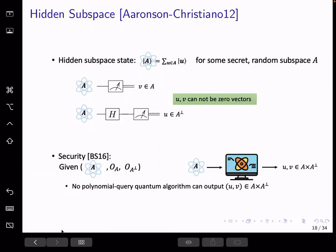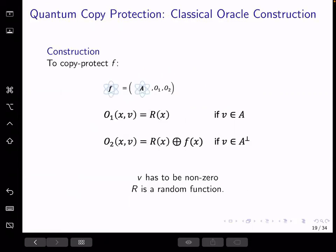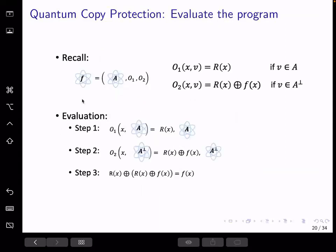Our copy protection construction for F consists of one copy of the subspace state A and two oracles. So each oracle checks if a part of the input is in A or in A perp, respectively, and then gives a secret share of the function F evaluated on X. That is, the first oracle gives a random function evaluation, and the second oracle gives the random evaluation XORed with F of X.